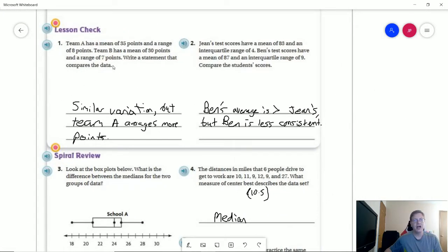So number one on the back, we are going to have a very similar variation. We're only one point difference as far as our variation between the two teams. However, team A is going to average five points higher.